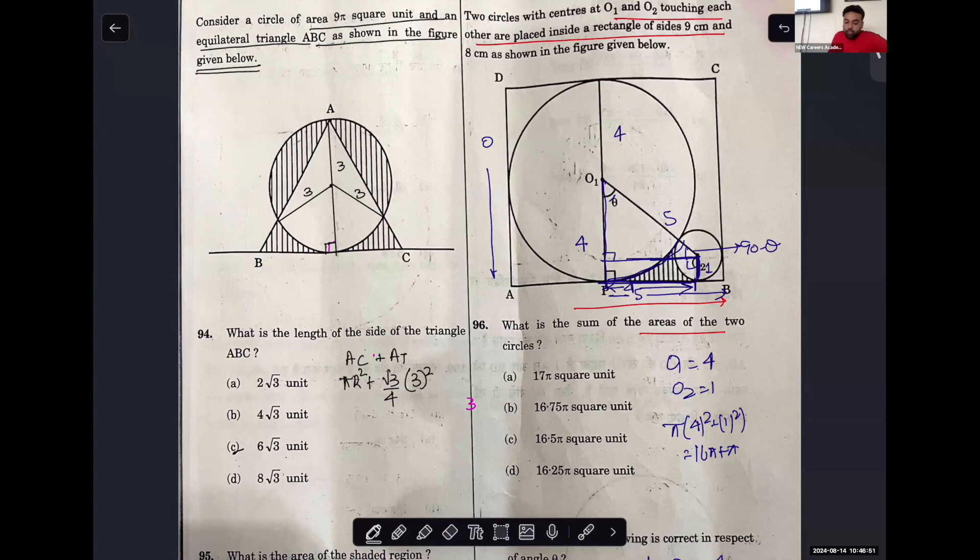What do we have is, if we draw it like this, this becomes 90. Is it clear? If this is 90, what happens is, this is my 3, this is 3. We need to find this angle.